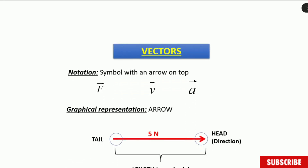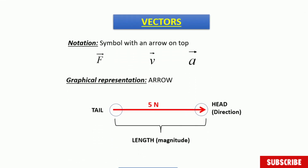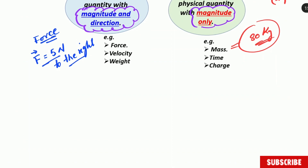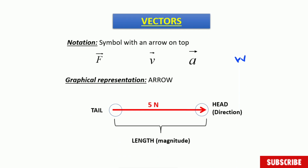Let's speak about vectors, since that is the main purpose of this lesson. Vector quantities are represented with the letter symbol of that physical quantity, plus a small arrow pointing to the right on top of the symbol. So if you see any physical quantity with a small arrow on top, that means it is a vector. For instance, weight — the symbol is W — with a small arrow on top of the W, indicating it is a vector quantity.